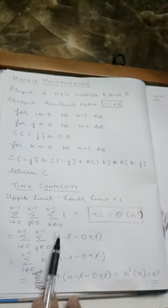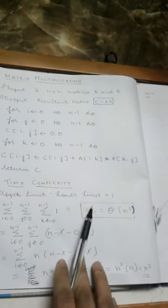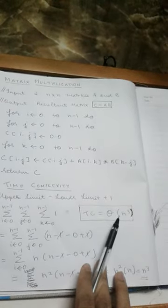So we have three summations accordingly. Now solving this repeatedly, we get the time complexity to be n cube, that is, time complexity is equal to big theta of n cube. So the time complexity of matrix multiplication is n cube. Thank you.